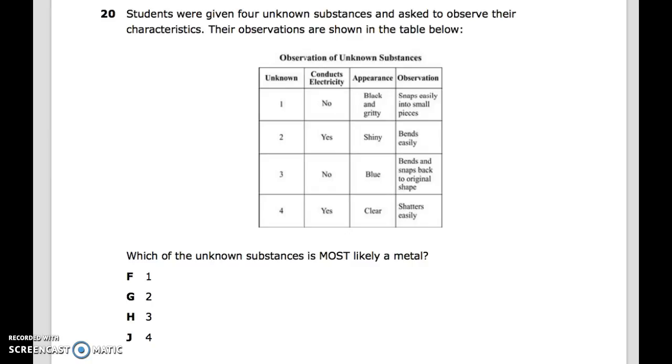20: Students were given four unknown substances and asked to observe their characteristics. Their observations are shown in the table below. Unknown, Conducts electricity, Appearance, Observation: 1. No, Black and grainy, Snaps easily into small pieces. 2. Yes, Shiny, Bends easily. 3. No, Blue, Bends and snaps back to original shape. 4. Yes, Clear, Shatters easily. Which of the unknown substances is most likely a metal? F. 1, G. 2, H. 3, J. 4.